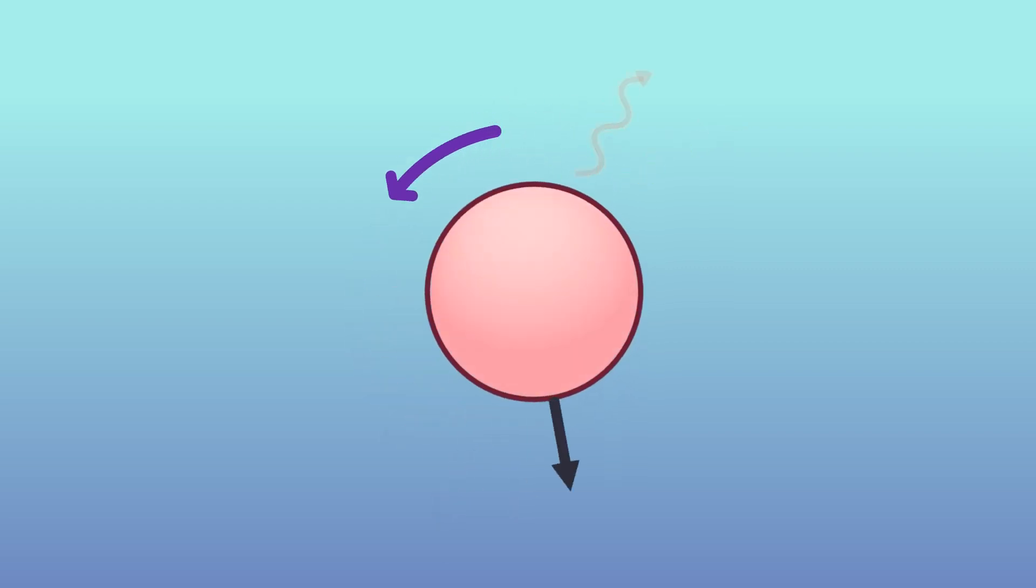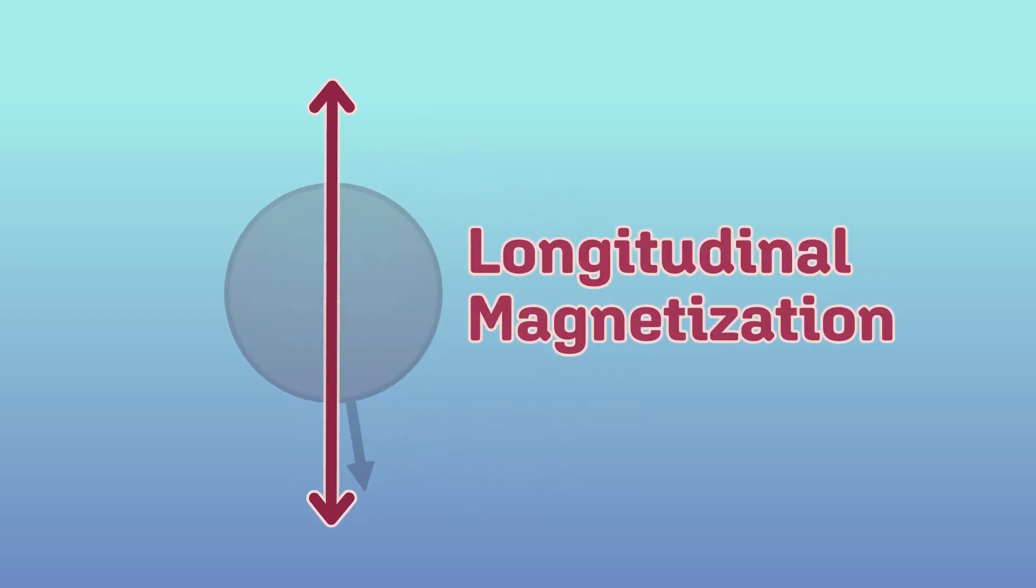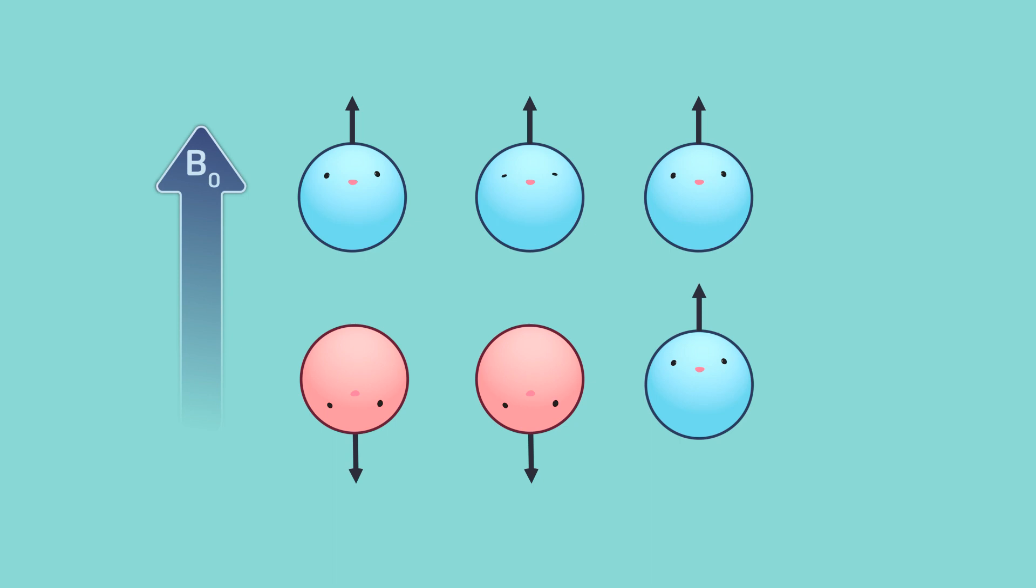Knocking the protons down into another plane is a change in their longitudinal magnetization. Normally, the majority of protons are going with the flow and following the direction of the external magnetic field, but with a little extra energy, which we can call excitation,